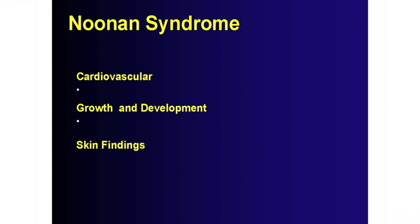Growth and development are affected in pretty much all the RASopathies. For Noonan syndrome, height is usually at the lower end of a Caucasian growth curve. There's a genotype-phenotype correlation shaking out — individuals with SOS1 mutations don't have the height issue, which is really interesting. Growth hormone is FDA-approved for Noonan syndrome even if the patient is not frankly growth hormone deficient. It's not uncommon to have someone on growth hormone even without growth hormone deficiency in Noonan syndrome.